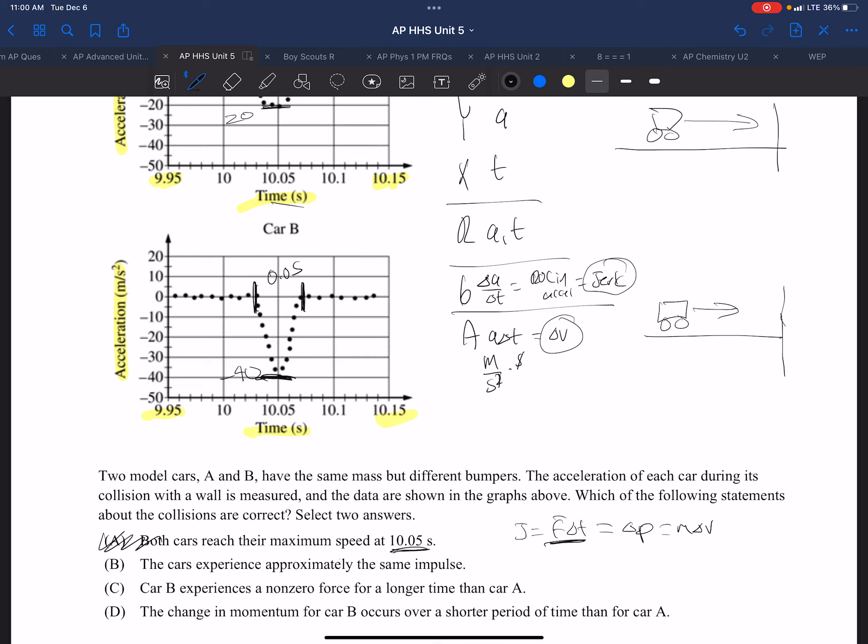So what we have is the acceleration, so F is ma. ma delta t would be equal to m delta v.